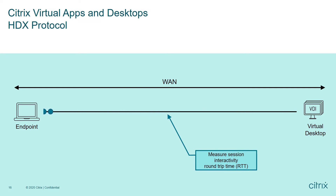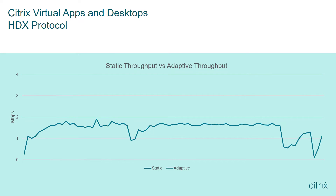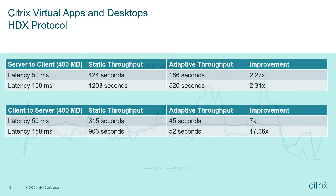With adaptive transport, we achieve a better video streaming experience because the dynamic buffers allow the system to put more data on the wire if the network can support it. With adaptive transport, we also achieve faster file copies as the system senses and responds to network conditions.